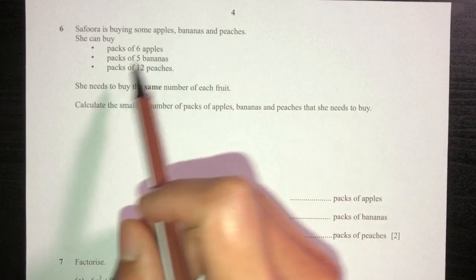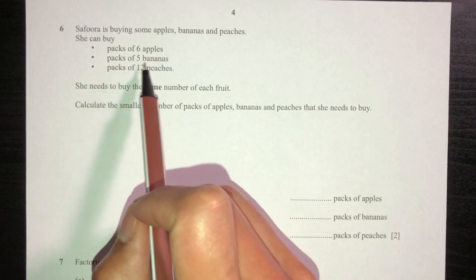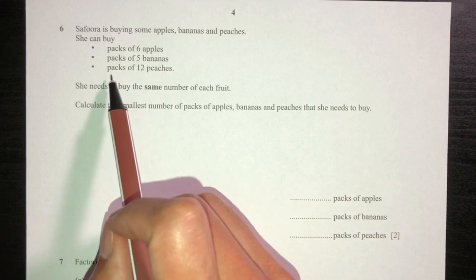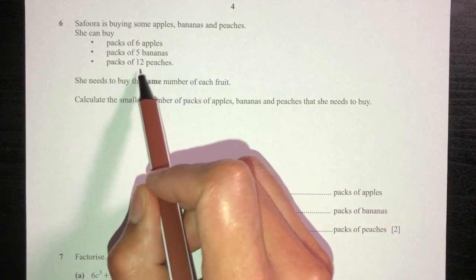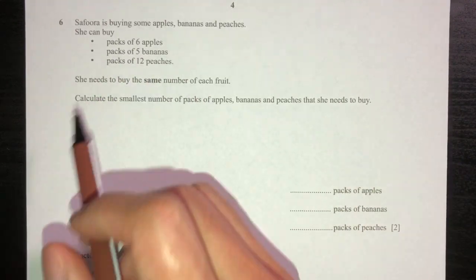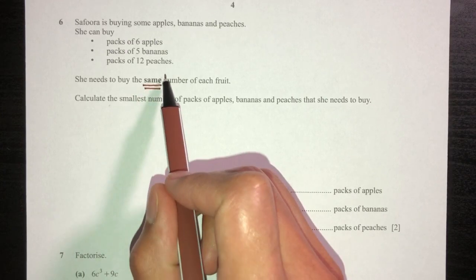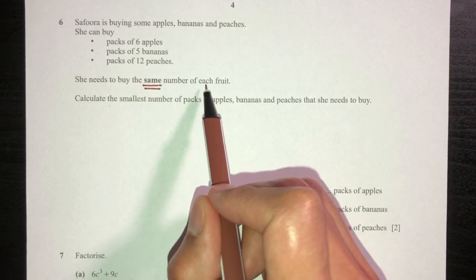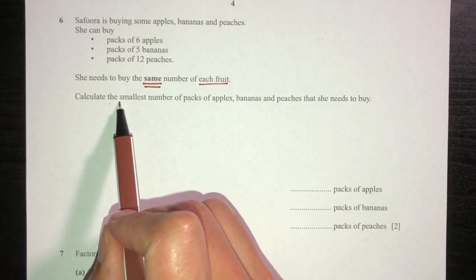Sephora is buying some apples, bananas, and peaches. She can buy packs of six apples, packs of five bananas, and packs of twelve peaches. She needs to buy the same number of fruits of each fruit. Calculate the smallest number of packs of apples, bananas, and peaches that she needs to buy.